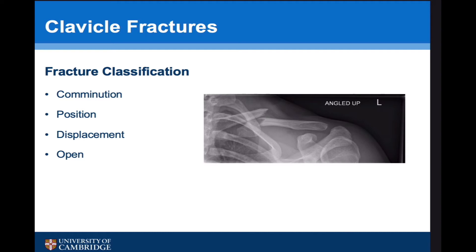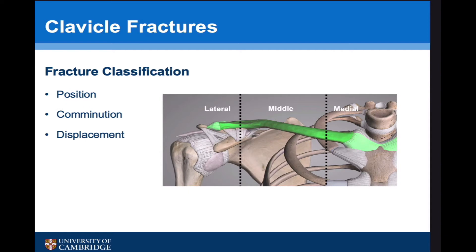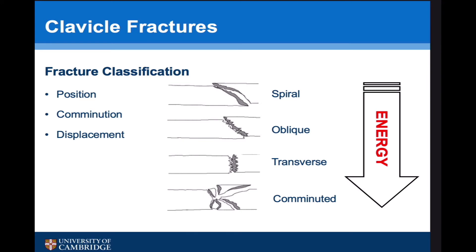Fracture classification is important as it really helps us know how we're going to treat fractures. The important things to look at are the position of the fracture — whether it's in the middle, lateral or medial parts of the bone — and comminution. You can have a spiral fracture, an oblique fracture, a transverse fracture or a comminuted fracture, and these fractures occur with increasing amounts of energy. A comminuted fracture not only means the bone is broken into smaller parts, it has required more energy, which can affect the surrounding soft tissues, the likelihood of healing, and perhaps the requirement for surgery.